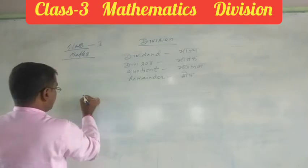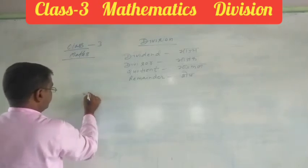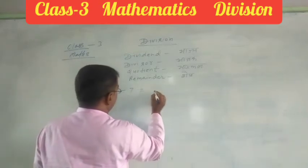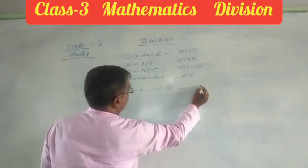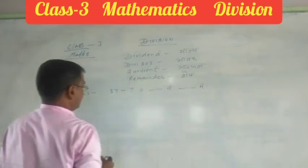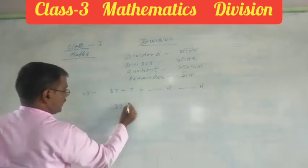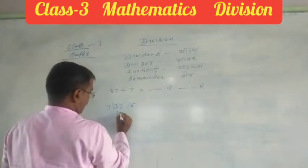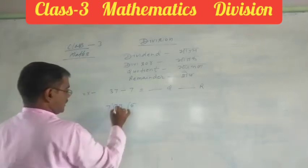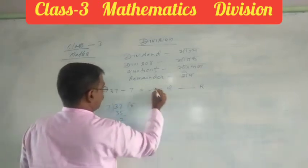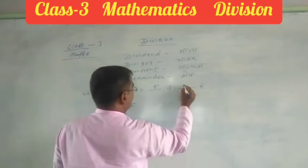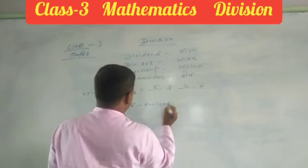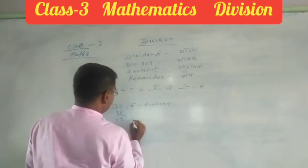So you see one example: 37 divided by 7 equals 5 remainder 2. Therefore, we divide 37 by 7. 7 times 5 is 35, here 2. 7 goes into 37 five times. Here we write 5 is quotient and 2 is remainder. Now, it is remainder.